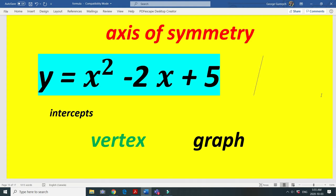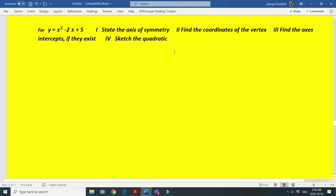We have a quadratic function y equals x squared minus 2x plus 5. State for this function the axis of symmetry, find the coordinates of the vertex, find the axis intercepts if they exist, and sketch the quadratic.